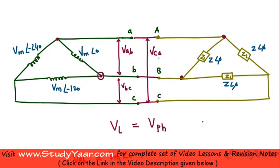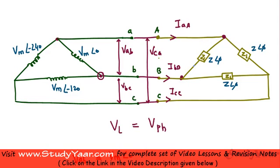Now let's look at my current quantities. This is my line current Iaa, this is my line current Ibb, and this is my line current Icc. We are going to assume that my phase current — the current flowing in this particular element — is Iab, where this is terminal A and this is terminal B. The current flowing in this load is Ibc, and this one I am going to call Ica.